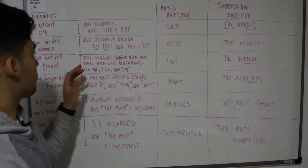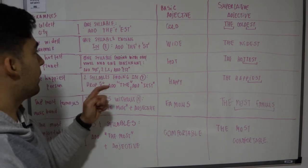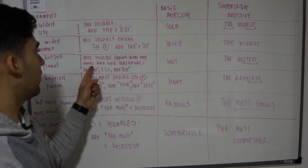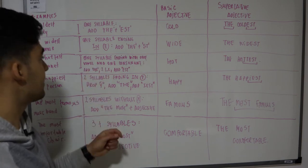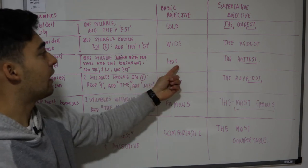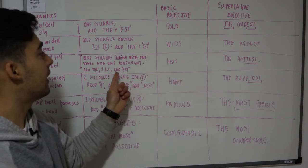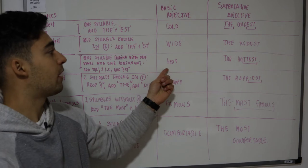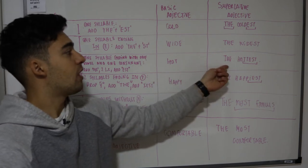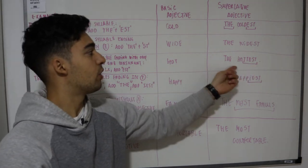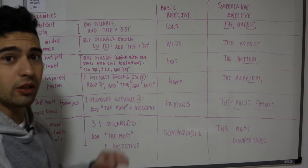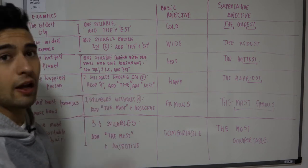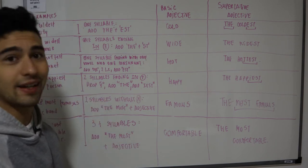En la tercera regla tenemos palabras de una sílaba que terminan con una vocal y una consonante. A ellas se les agrega el the, se duplica la última consonante y se le agrega est. Con la palabra hot decimos the hottest. Como ejemplo tenemos the hottest planet, el planeta más caluroso o el más caliente.